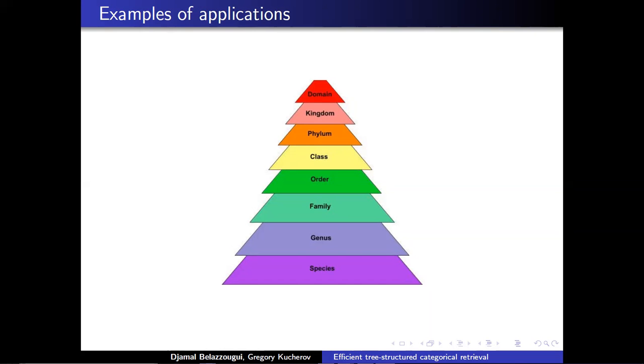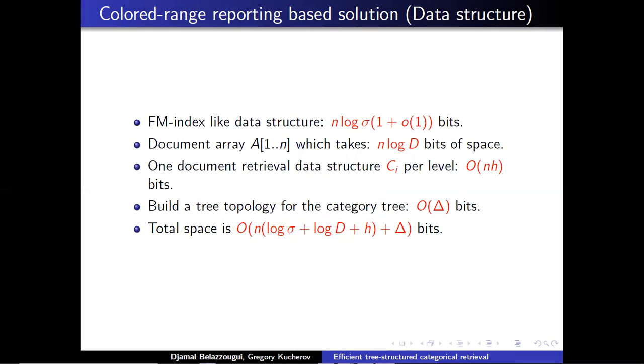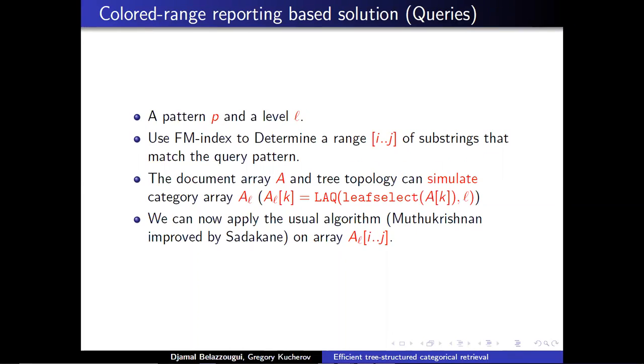I will quickly present our first solution. It's essentially the data structures for document retrieval augmented with the tree topology. Essentially we can simulate a document array at every level of the tree. We would have a different document array and we can simulate the operations by using the tree topology and the original document array. This is an explanation of how the queries can be solved.